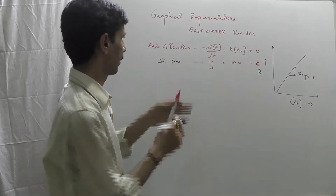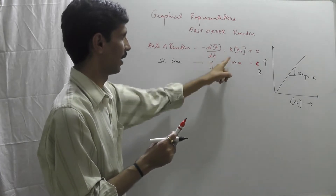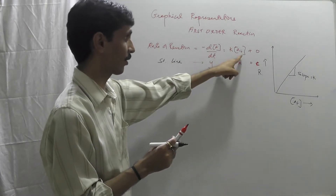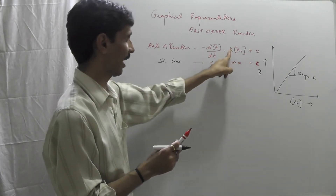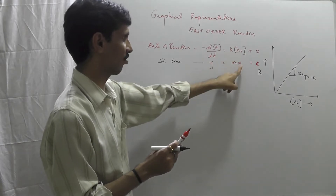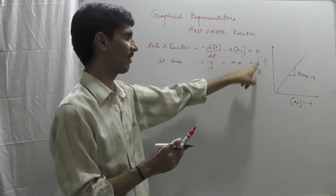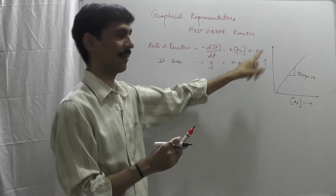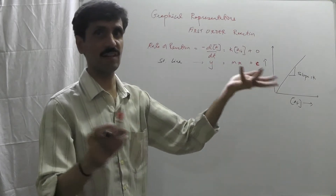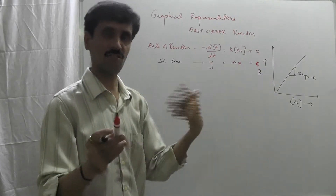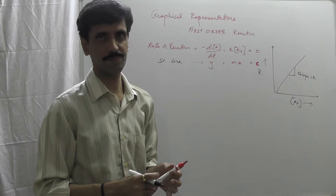To repeat: the rate of the reaction, that is dA upon dt, is equal to K[A]t plus 0. So K is the slope, [A]t is the x-axis, and 0 means there is no intercept. When there is no intercept, it is a straight line passing through the origin.